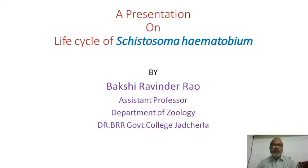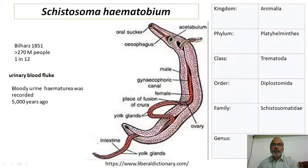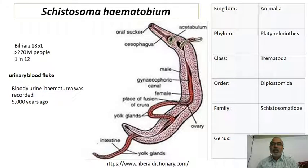Today, as a part of our discussion, we are going to discuss the life cycle of Schistosoma haematobium, a parasite belonging to the flatworm category or the phylum Platyhelminthes. Schistosoma haematobium belongs to the kingdom Animalia, phylum Platyhelminthes, class Trematoda.